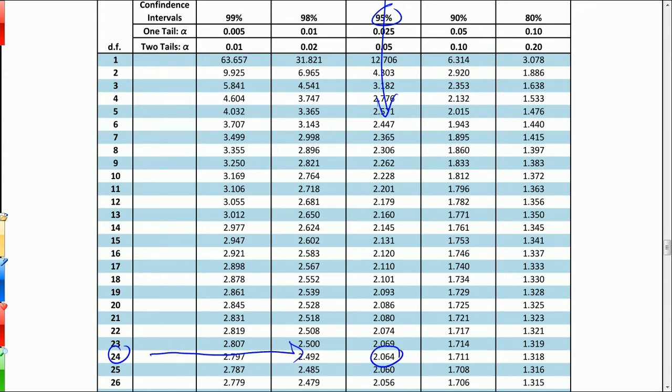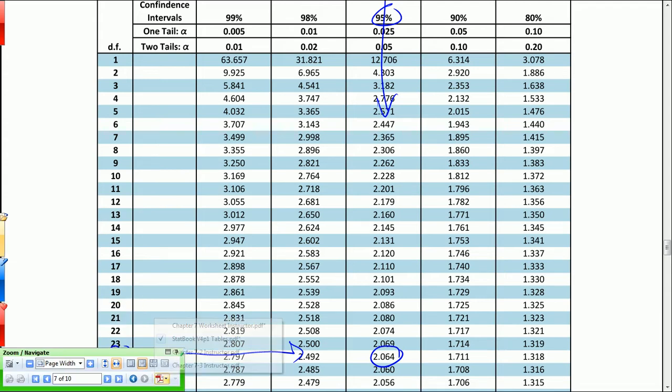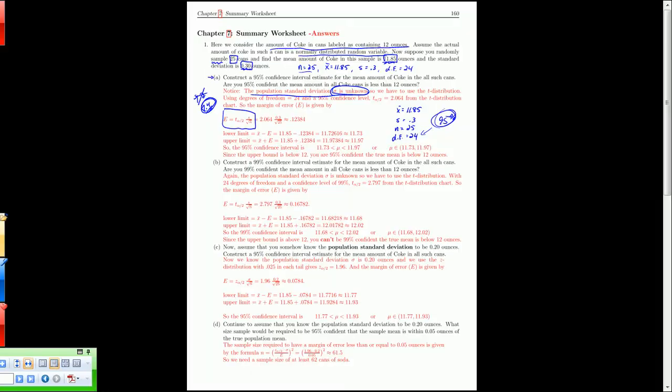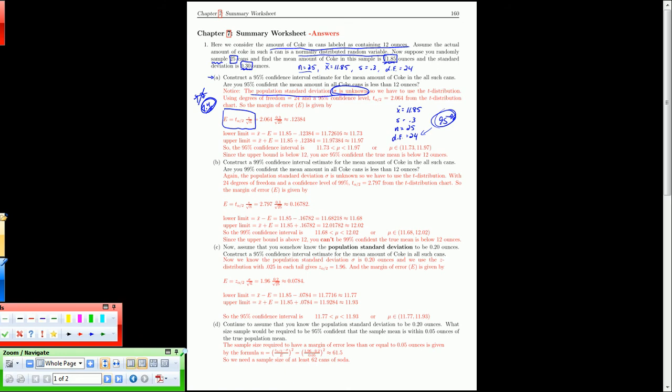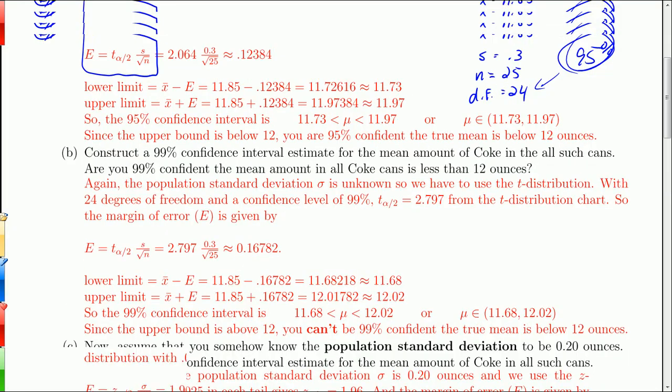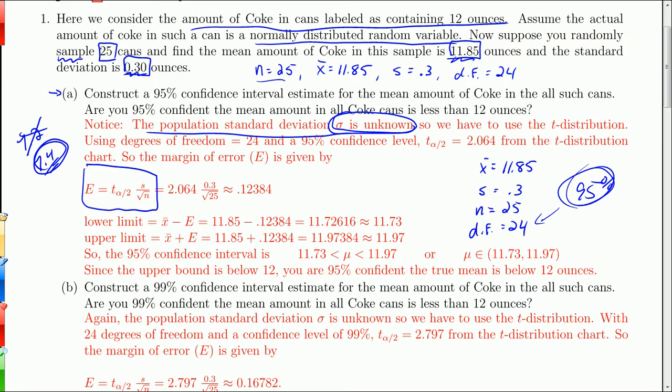So we'll go back to the worksheet. I better get that into full screen mode. There, now we have a little bit more room to work with. So 2.064, my critical value. There's S, the sample standard deviation, and the sample size. I get a margin of error, 0.1238.